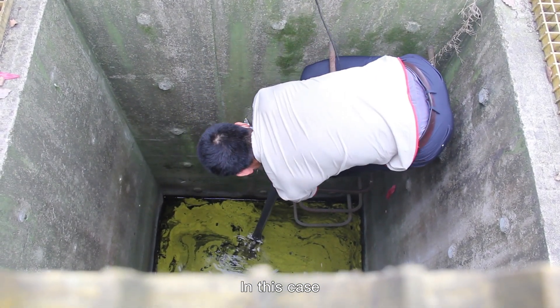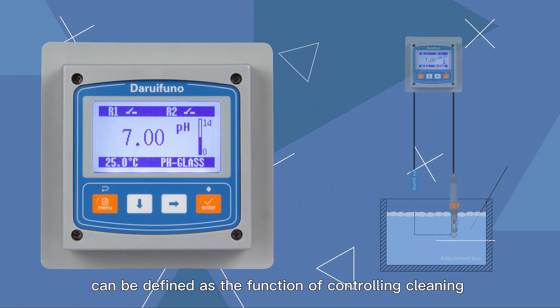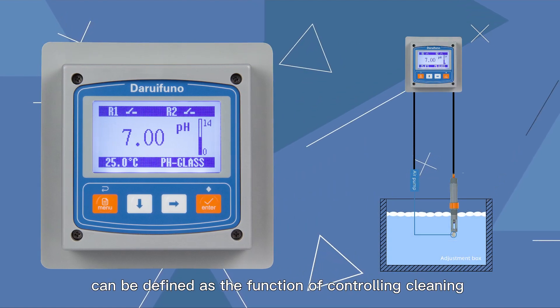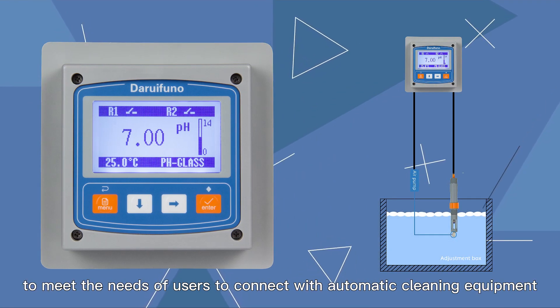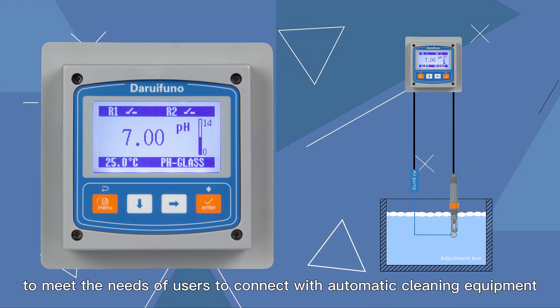In this case, the two relays inside the controller can be defined as the function of controlling cleaning to meet the needs of users to connect with automatic cleaning equipment.